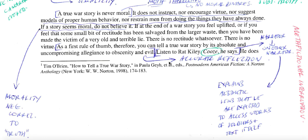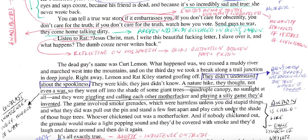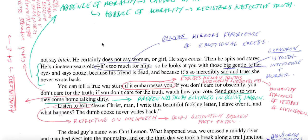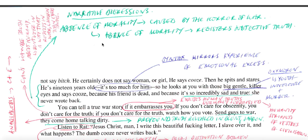The narrative digression, which is itself a metafictional reflection, goes on to talk about the previous story. 'Listen to Rat Kiley. Cooze, he says. He does not say bitch. He certainly does not say woman or girl. He says cooze. Then he spits and stares. He's 19 years old. It's too much for him. So he looks at you with those big gentle killer eyes and says cooze. Because his friend is dead. And because it's so incredibly sad and true — she never wrote back.'